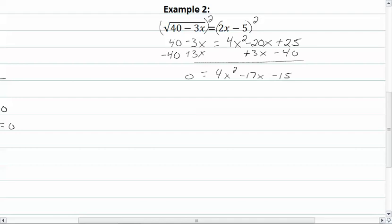And let's factor this. This will factor out to be (4x + 3)(x - 5) = 0. Set each factor equal to 0, and solve.